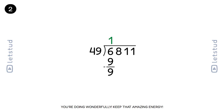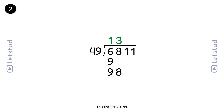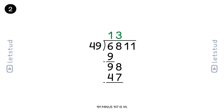You're doing wonderfully, keep that amazing energy. Now let's bring down the next digit, 1, making it 191. 49 fits into 191 three times. 49 times 3 is 147. 191 minus 147 is 44.